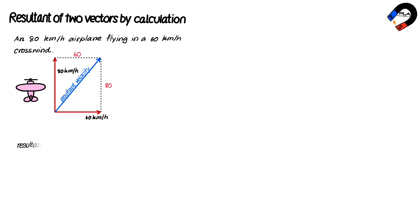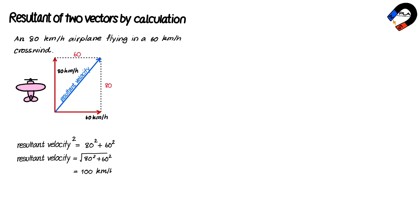We can calculate the magnitude of the resultant velocity using the Pythagorean theorem: resultant velocity squared equals 80 squared plus 60 squared, so resultant velocity equals the square root of 80 squared plus 60 squared, which equals 100 kilometers per hour. We can calculate the direction using the tangent ratio: the direction equals tan⁻¹ of 80 over 60, which equals 53 degrees to the 60 kilometers per hour direction.